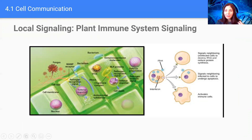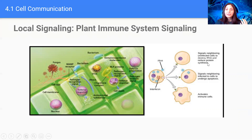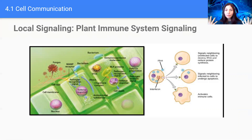For example, if a plant cell encounters a virus, we could have three different types of responses. That cell might signal neighboring unaffected cells to destroy the RNA and to reduce protein synthesis. It might signal neighboring infected cells to undergo apoptosis — programmed cell death. It could also activate immune cells to come and destroy the pathogen.